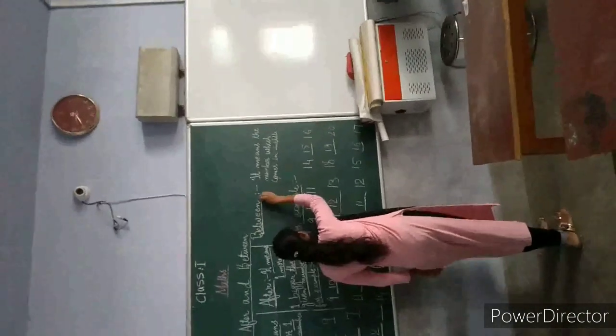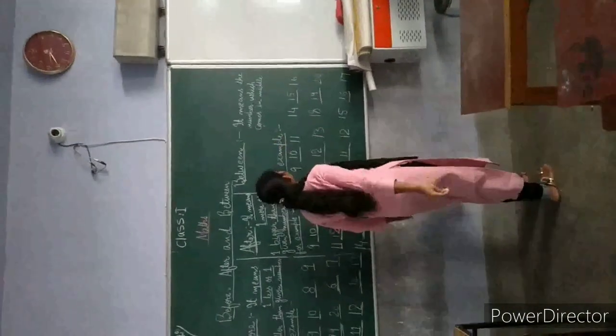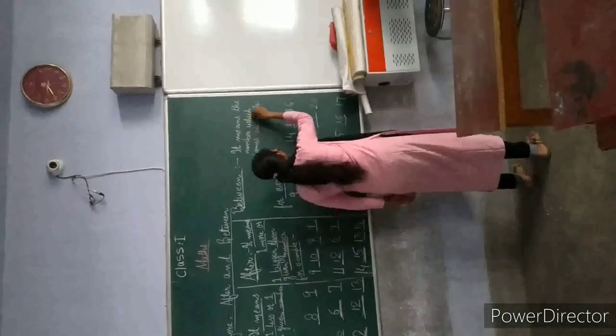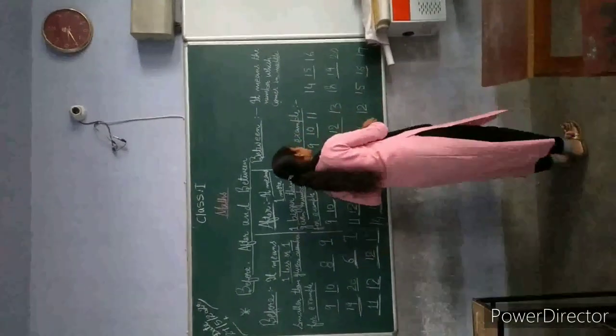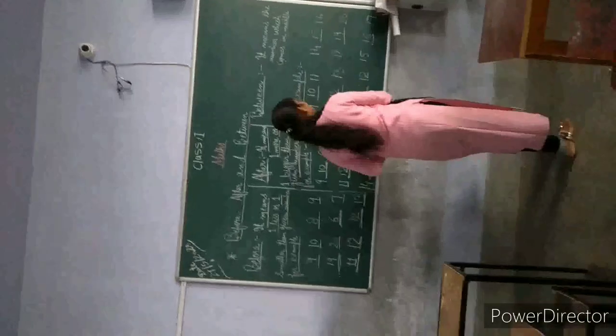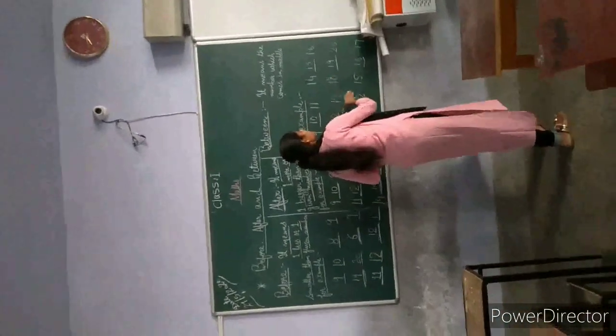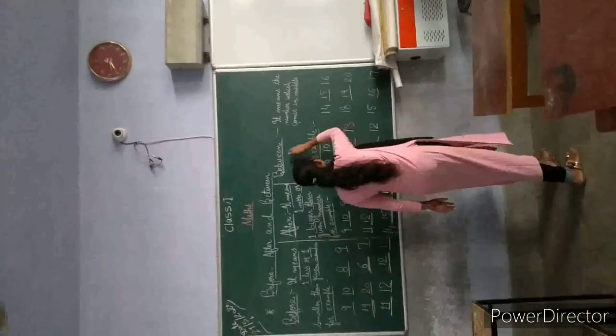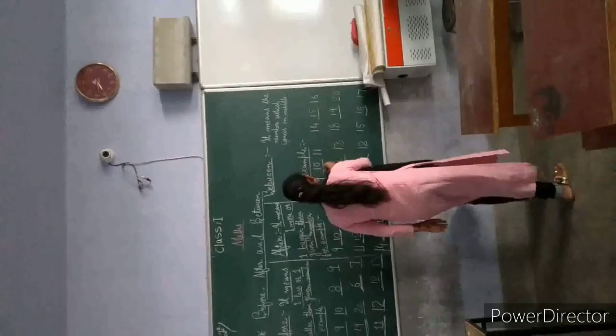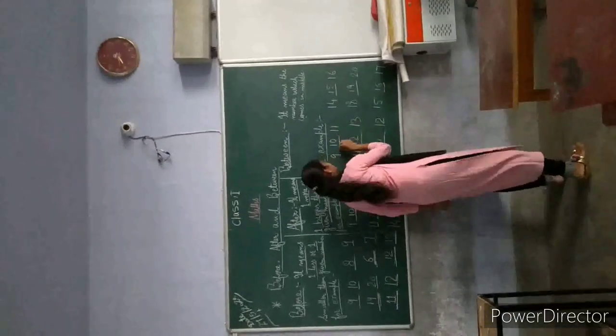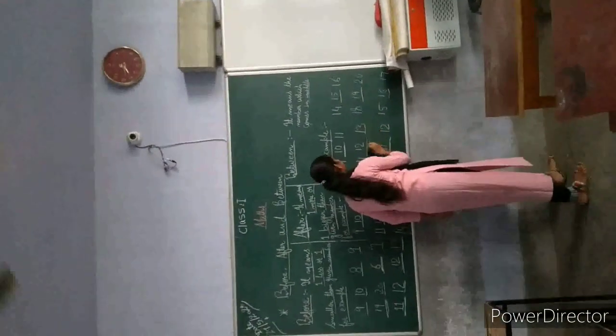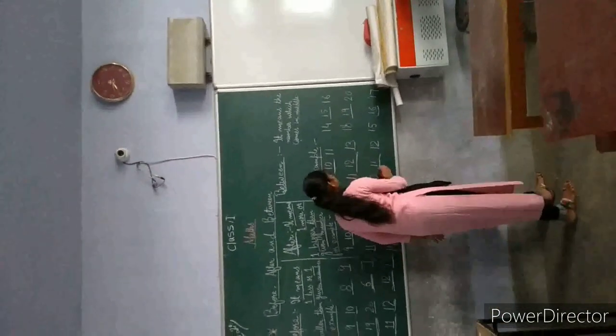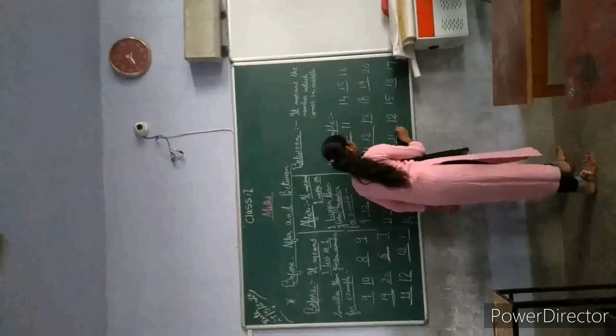Now, we will learn about Bittling. Bittling means the number which comes in the middle. One of the Bittling means the number which comes in the middle. For example, 9 of the Bittling means the number which comes in the middle.